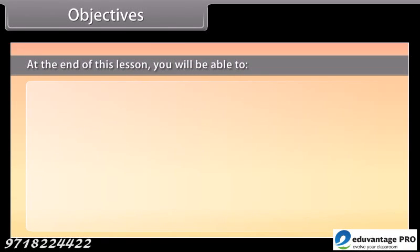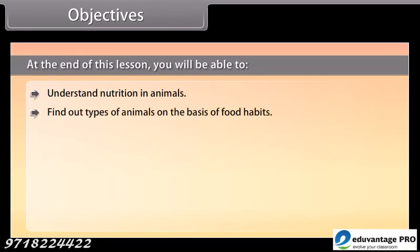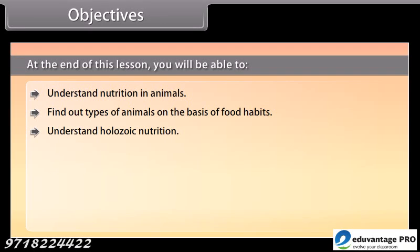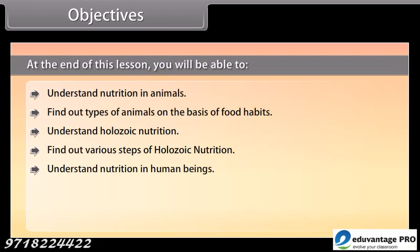At the end of this lesson, you will be able to understand nutrition in animals, find out types of animals on the basis of food habits, understand holozoic nutrition, find out various steps of holozoic nutrition, understand nutrition in human beings, and find out various organs of the digestive system.